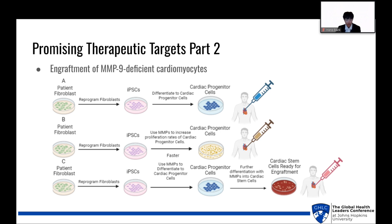Promising therapeutic targets, part 2. Another promising target is grafting MMP9-deficient cardiomyocytes directly into the heart, as we know this may help prevent arrhythmias. As shown in the diagram, there are a variety of ways of doing this. In all parts, we take patient fibroblasts and reprogram them into iPSCs. In part A, we differentiate these iPSCs into cardiac progenitor cells ready for engraftment. In part B, we use MMPs to alter and increase the proliferation rates of those progenitor cells. Finally, in part C, we further differentiate the cardiac progenitor cells with MMPs into cardiac stem cells, which reduces the risks of misdifferentiation.